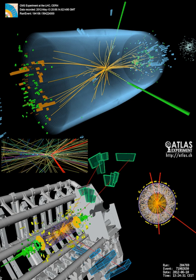Below an extremely high temperature, electroweak symmetry breaking causes the electroweak interaction to manifest in part as the short-ranged weak force, which is carried by massive gauge bosons. This symmetry breaking is required for atoms and other structures to form, as well as for nuclear reactions in stars, such as our Sun. The Higgs field is responsible for this symmetry breaking.